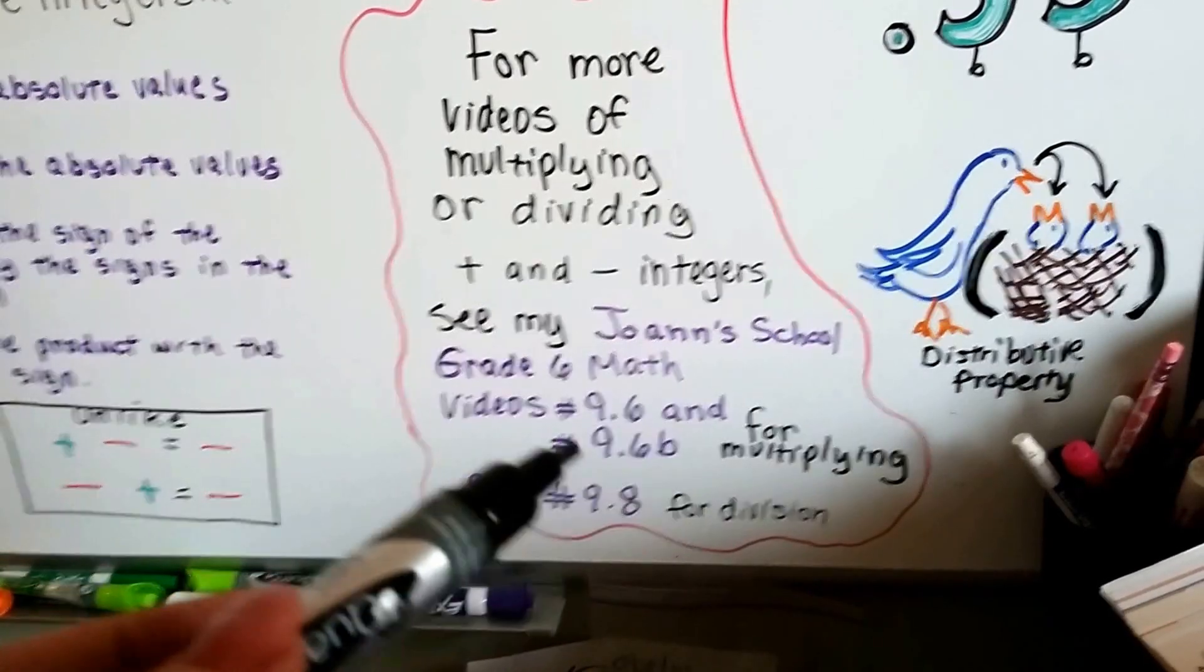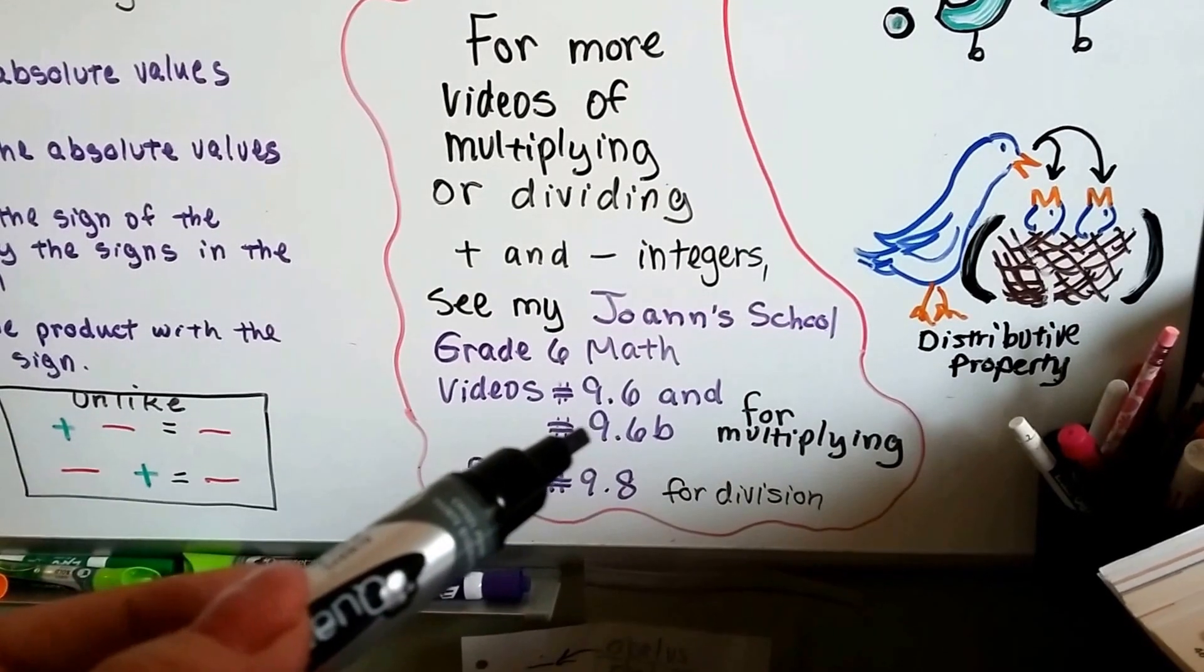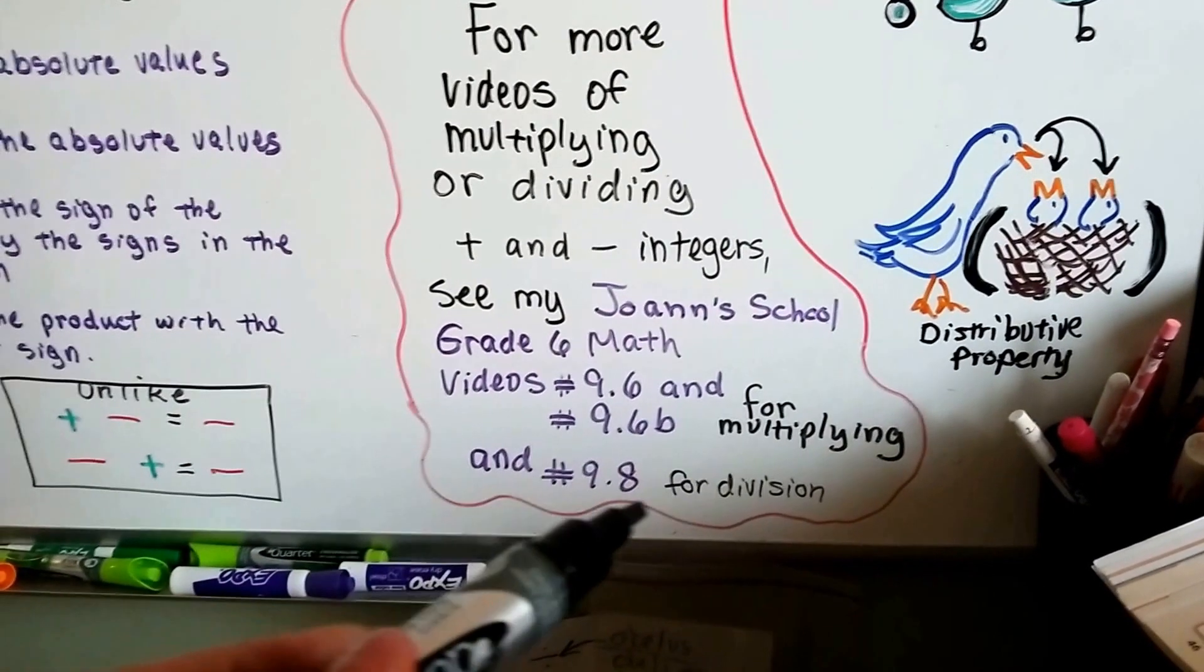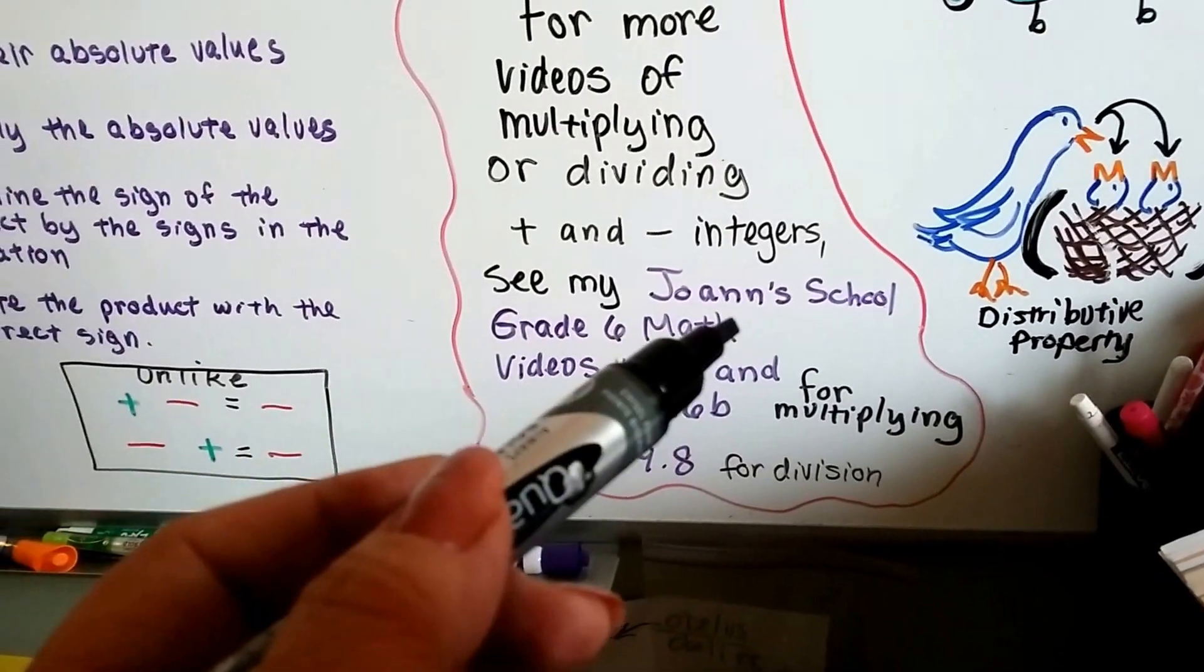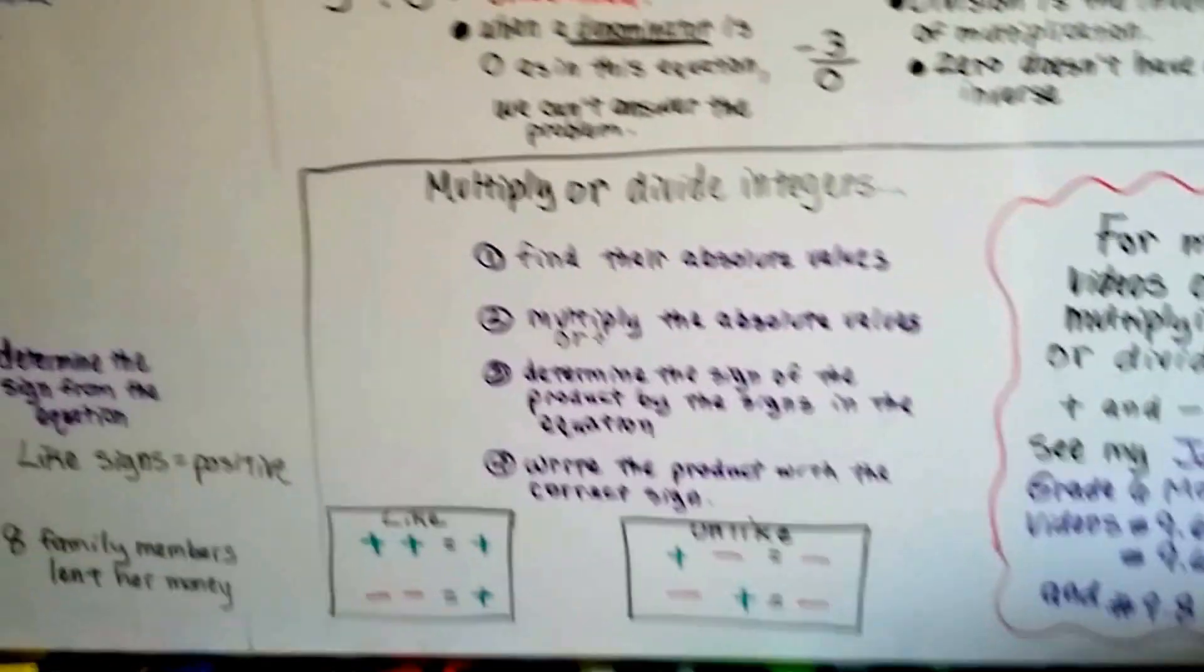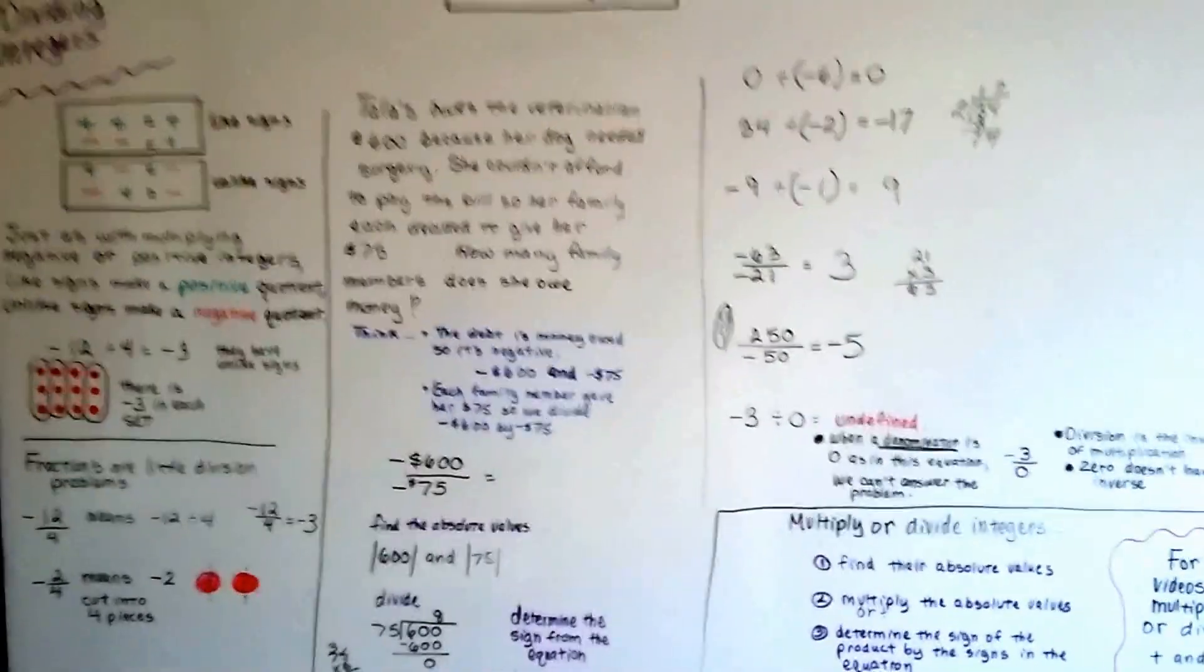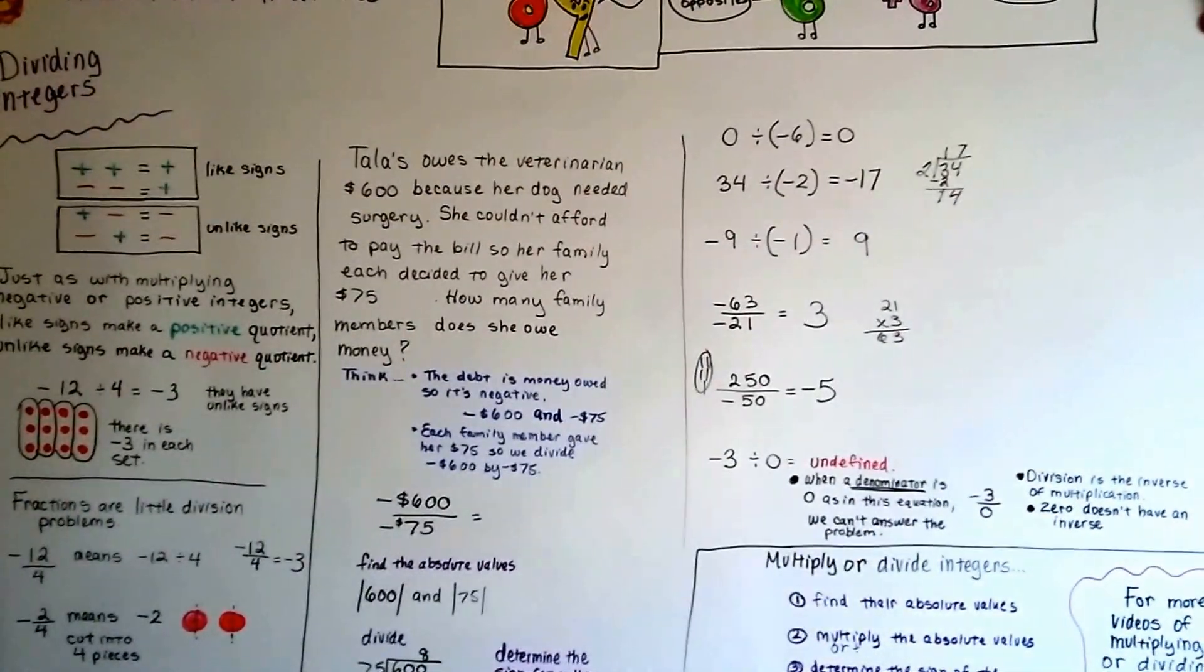So for the multiplying negative and positive integers, you want to see 9.6 and 9.6b. And for the division one, you want to see number 9.8, and that's in the grade 6 math for Joanne's School. Alright? It's in the playlist. So I hope that helps you. We're going to continue on, and we're going to go on to our word problems for dividing integers, and I hope to see you there. Bye!